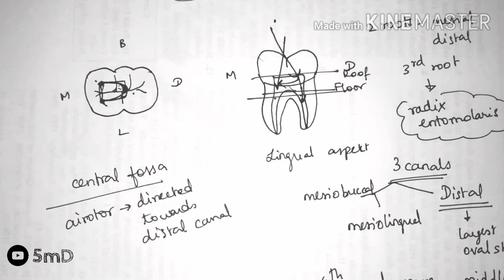Sometimes, the distal canal can have more than 2 orifices. Now, all the 3 canals will be located mostly in the mesial half of the tooth.